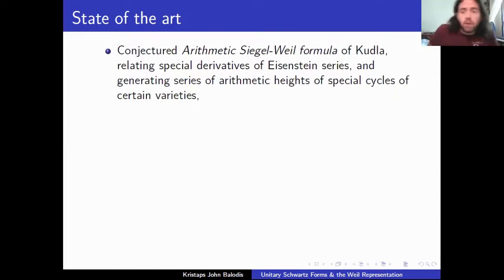Okay, so where is this all coming from? So this stems from a conjectured identity of Stephen Kudla called the arithmetic Siegel-Weil formula. And this relates certain derivatives of Eisenstein series. So if you've studied any modular forms before, you've probably come up against the example of these special functions called Eisenstein series. In this case, this is a generalization of the very classic setup you're introduced to. And so it takes these derivatives of the Eisenstein series, and it relates them to generating series of arithmetic heights of special cycles of certain varieties.